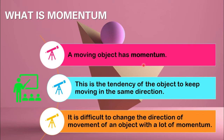Momentum is the product of mass and velocity of the object. This is the tendency of the object to keep moving in the same direction, because it has velocity in the moving direction. Therefore it keeps moving in the same direction. It is difficult to change the direction of movement of an object with a lot of momentum, because it has huge momentum in its moving direction.